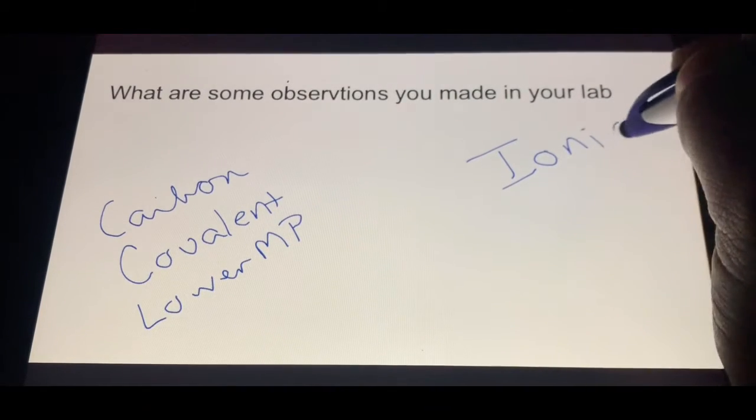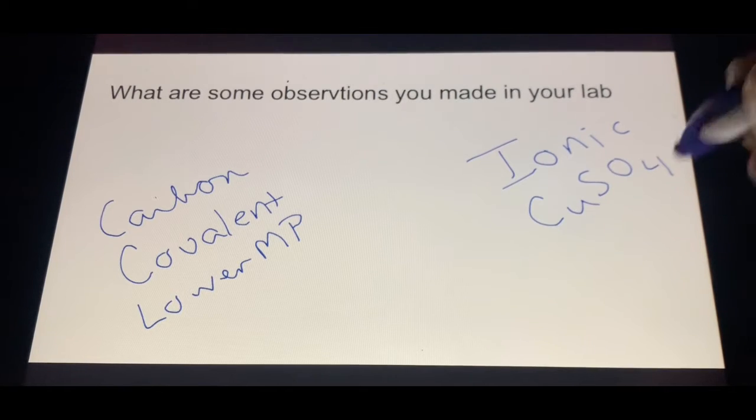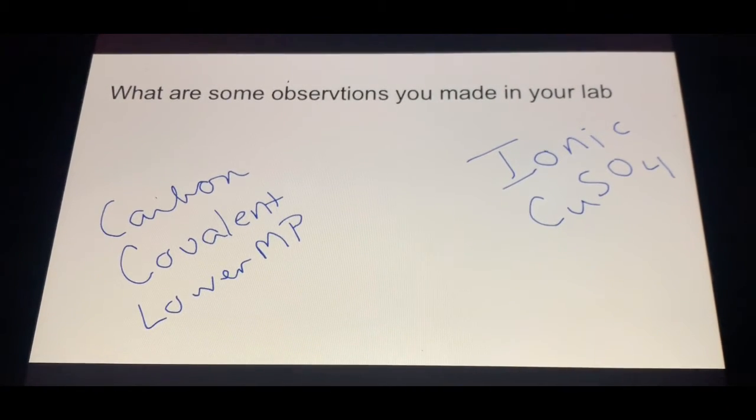Ionics, a prime example would be copper sulfate. You were unable to melt it. These generally will dissolve in water, conduct electricity, and have high melting points, high boiling points. That's the main differences you'll see in lab at this stage.